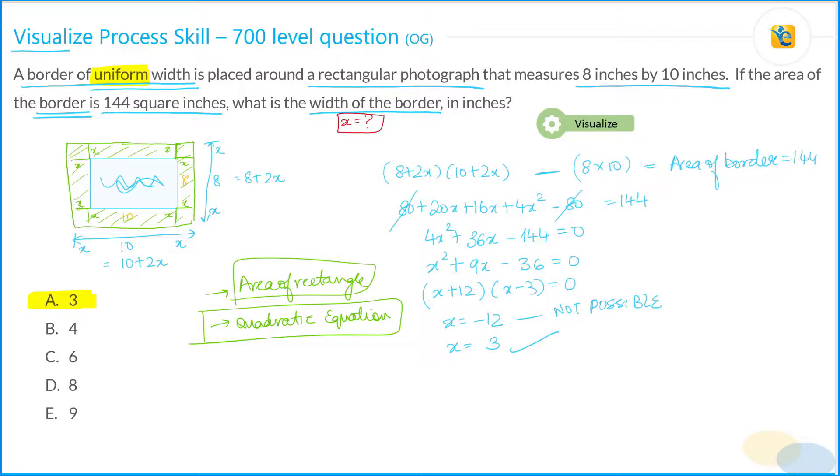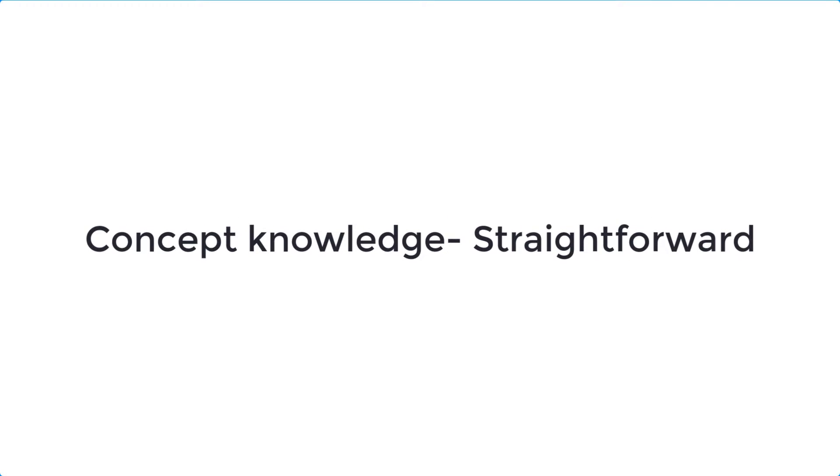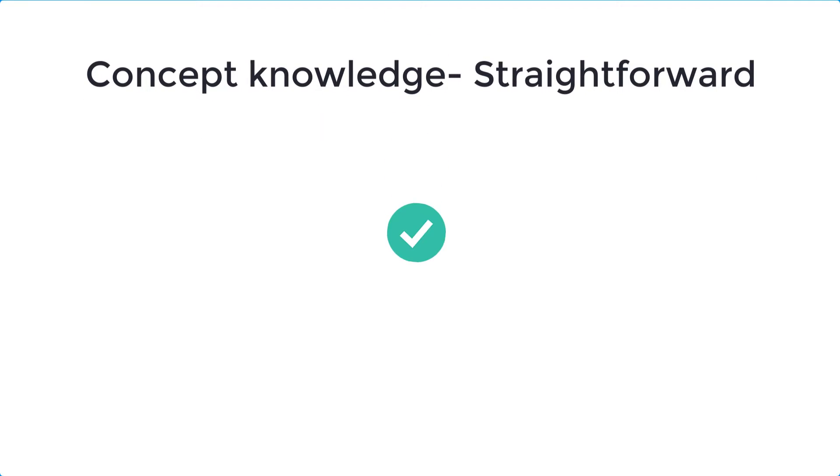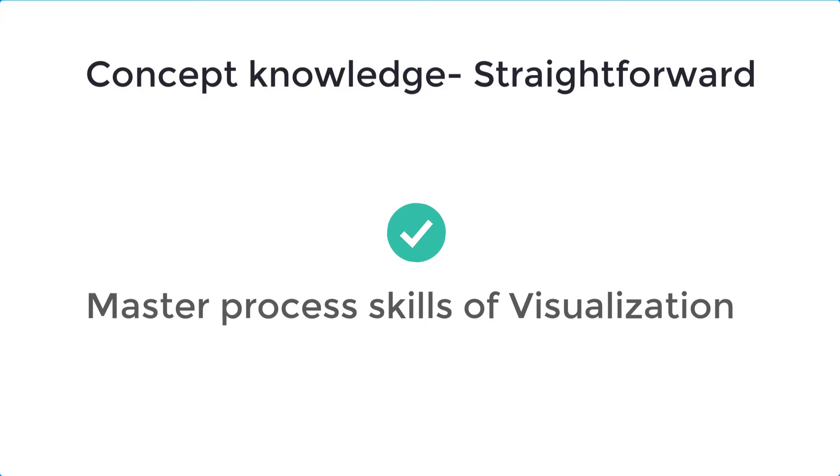But the reason why this question is 700 level and not an easier question is because of the process—the application of process skill of visualization that is required in this question. And the concept knowledge standpoint is relatively straightforward. So, for you to solve difficult questions, it's very critical that you master these process skills.